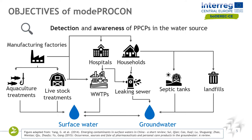So where do these substances come from? Very often it's not from a leak from manufacturing factories where we can detect the source of these contaminants. On the contrary, we have a lot of secondary sources that can contribute to the presence of these chemicals in the environment. Such sources can be, for example, hospitals or households and leaking sewer systems, or treatment in wastewater treatment plants which is not sufficient to degrade these chemicals. Other sources can be aquaculture treatment and livestock treatment facilities, as well as septic tanks and landfills.